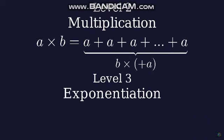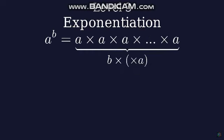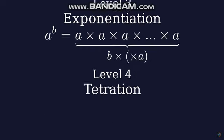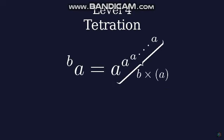The level above multiplication is exponentiation. Exponentiation is repeated multiplication. A to the power of B is equal to A multiplied by itself, B times. The next operation that many people didn't hear about is tetration. Tetration is repeated exponentiation. A tetration B is equal to A raised to the power of itself, B times.